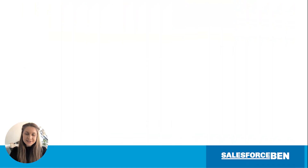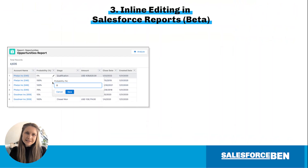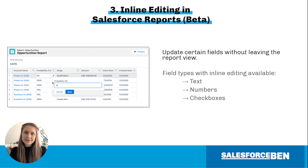Salesforce is finally bringing the power of inline editing to reports. So just like a list view, now if a record is out of date, you can update certain fields without leaving the report view. The field types available for this will include text, number, and checkboxes. A great use case would be if a sales rep is viewing an opportunity report, they can update the probability field from the report, and the report will automatically refresh.